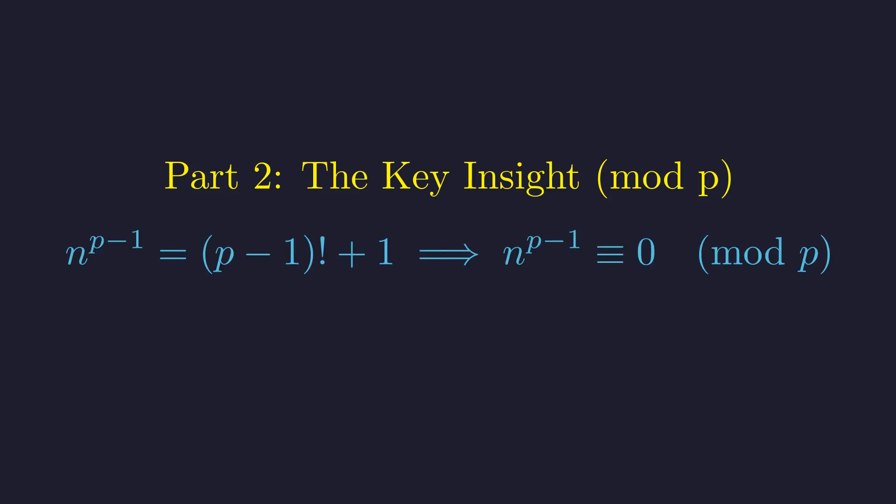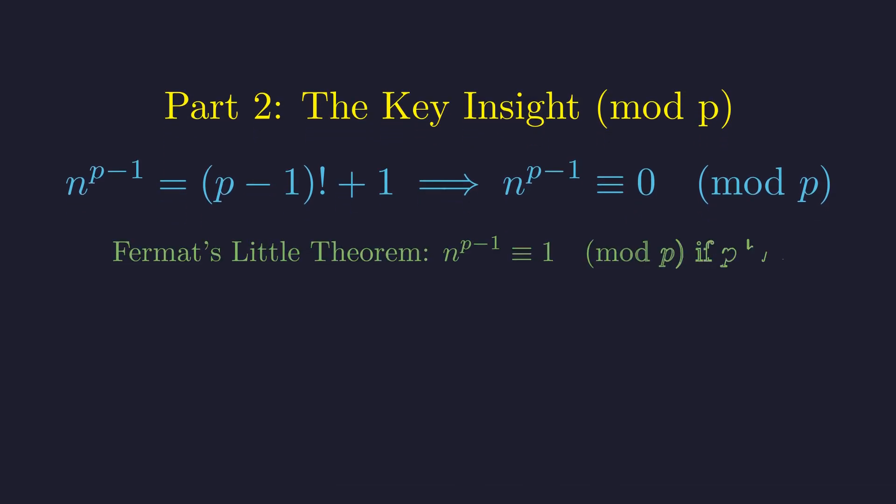Now let's bring the left-hand side into the picture and see what happens when we look at the whole equation modulo p. Since the two sides are equal, the left side must also be congruent to 0 modulo p. Fermat's little theorem states that n to the (p-1) is congruent to 1 mod p, but it comes with a critical condition. This only holds if p does not divide n.